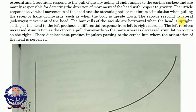When you deflect your head to the left, the left receives increased stimulation as the otoconia pull downward on the hairs, whereas decreased stimulation occurs on the right because the otoconia pull upward on the right side hairs. So the left experiences increased stimulation because the otoconia move toward the bottom, while the right experiences decreased stimulation because the otoconia move upward. This displacement produces impulses passing to the cerebellum where the orientation of the head is processed.